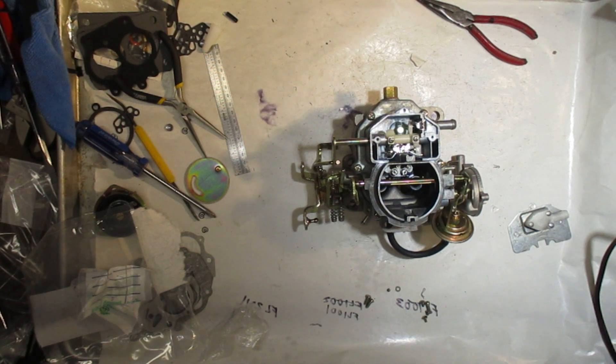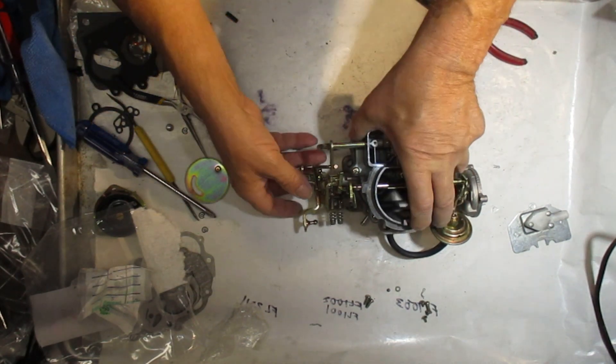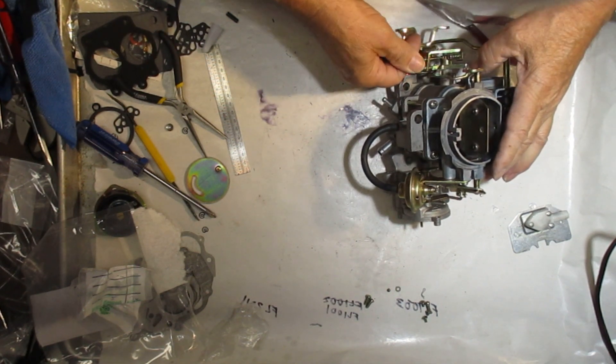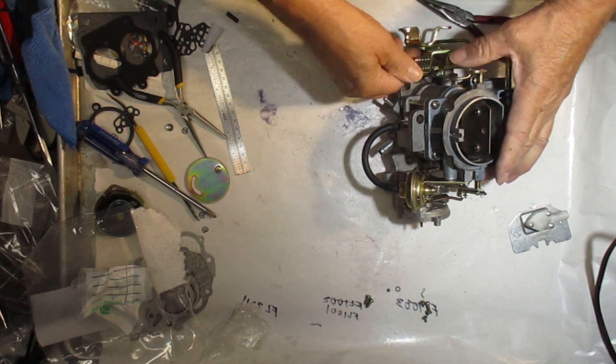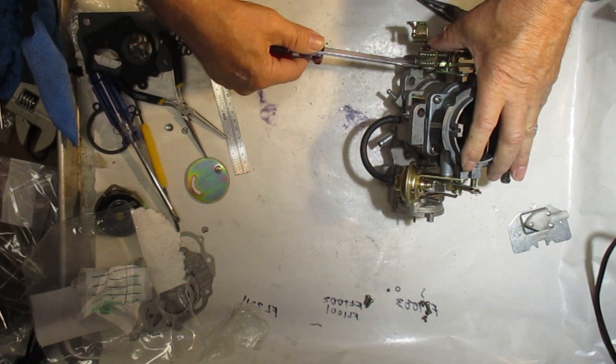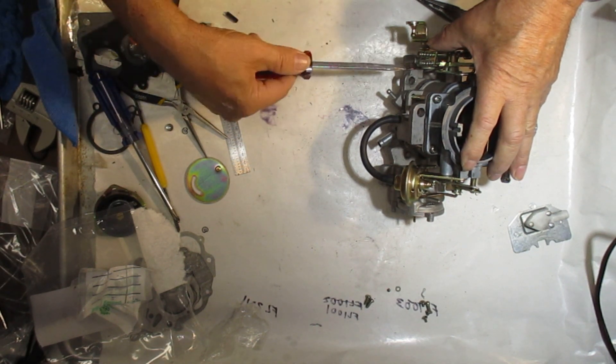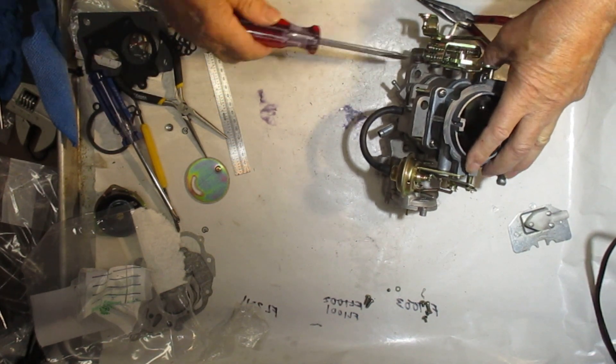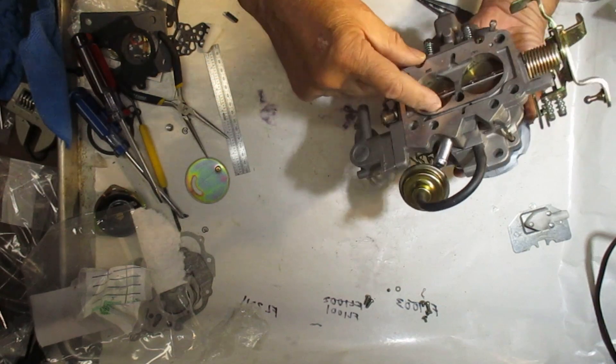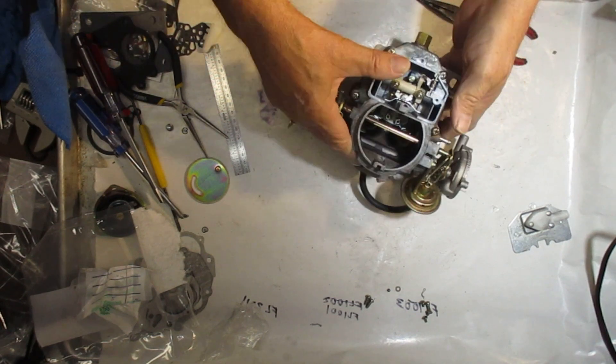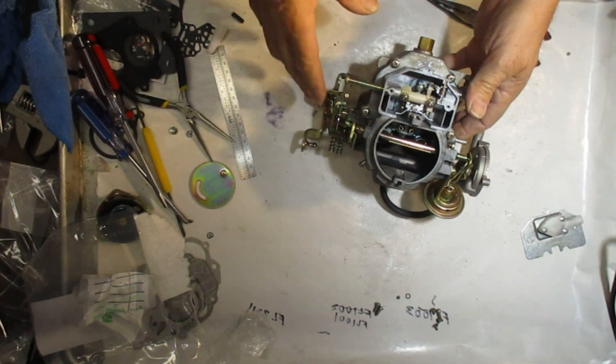Alright, so first thing we want to do is turn the idle screw all the way out. That would be one of these actually. Turn that out. What we want to make sure is that the throttle valves are closed all the way. We'll just unscrew that so it's not holding the valves. The valves are closed. Can't see anything around them. That's step one.